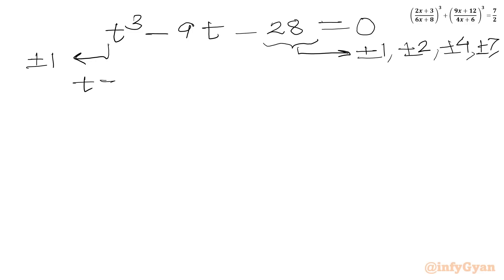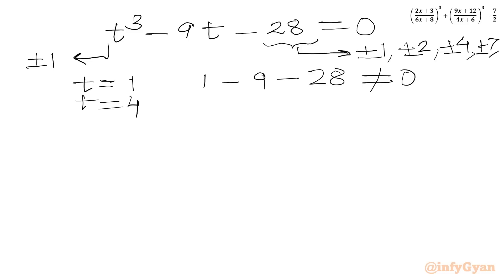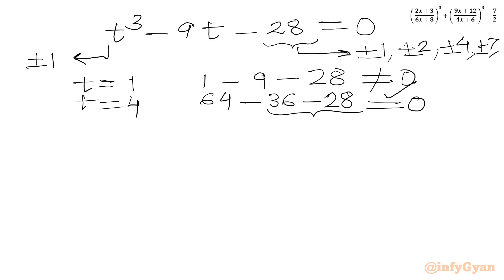Testing T = 1: 1 − 9 − 28 ≠ 0. Testing T = 2: no. Testing T = 4: 64 − 36 − 28 = 0. Yes, this is true because −64 + 64 = 0. So T = 4 is our base solution.